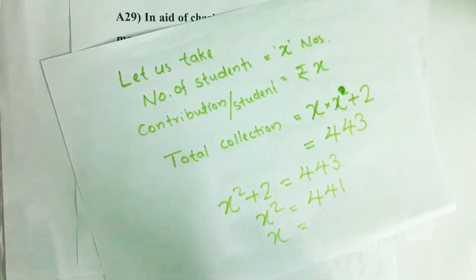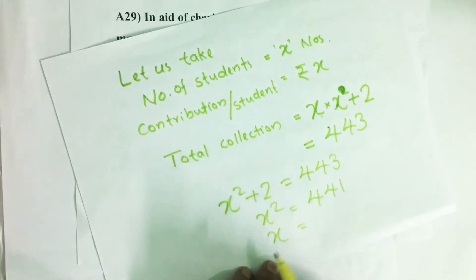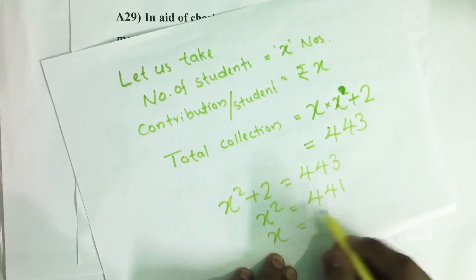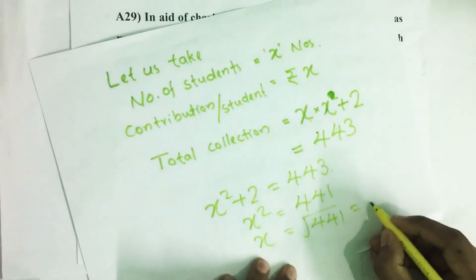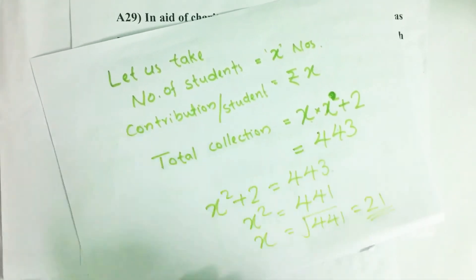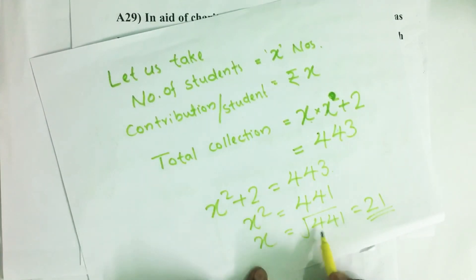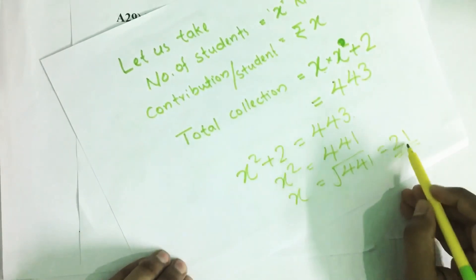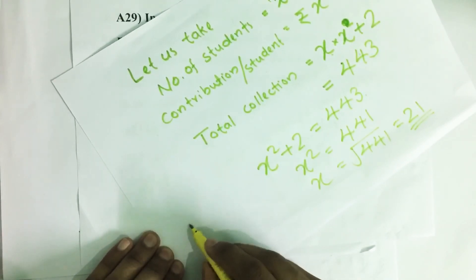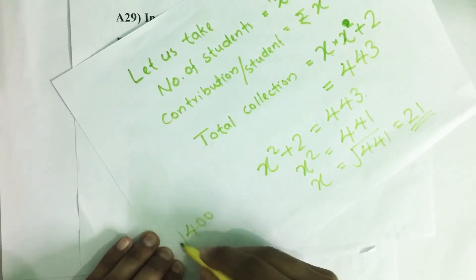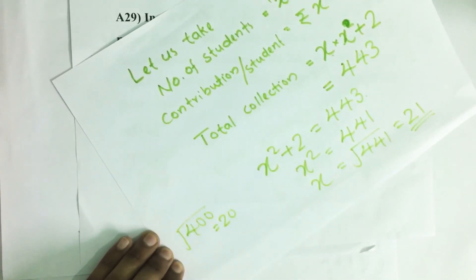Then X equals the square root of 441. Since X represents number of students or a contribution amount, we take only the positive value of the square root, which is 21. If you don't know the square root of 441, note that square root of 400 equals 20, so square root of 441 must be near to 20.